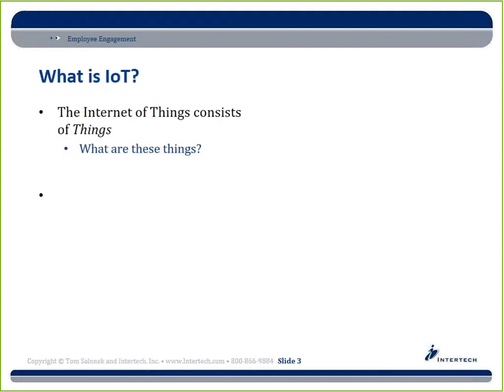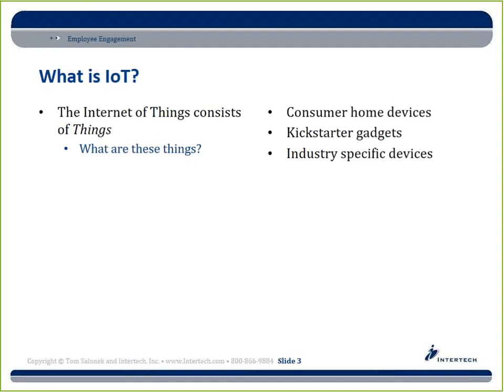So what is this term we keep hearing — the Internet of Things? The key is that it consists of things: little devices, instruments deployed throughout your environment. I put them in roughly two categories: consumer home devices, which you're probably familiar with, and Kickstarter gadgets. And then there are industry-specific devices, which I think is what most of the people in this room are concerned with.